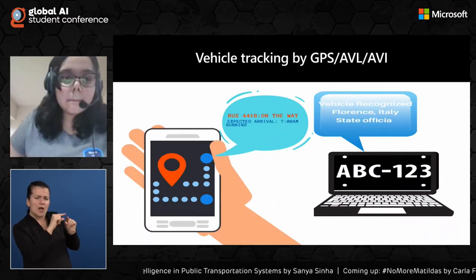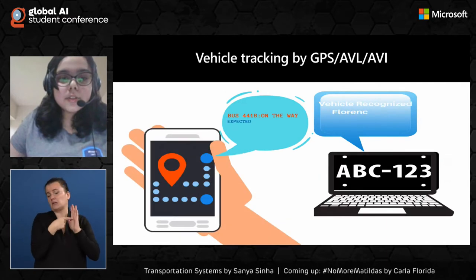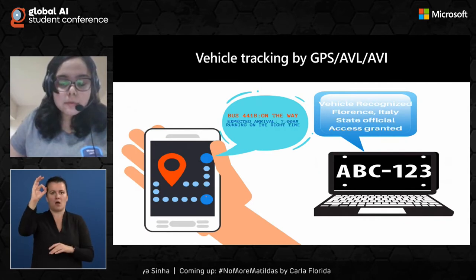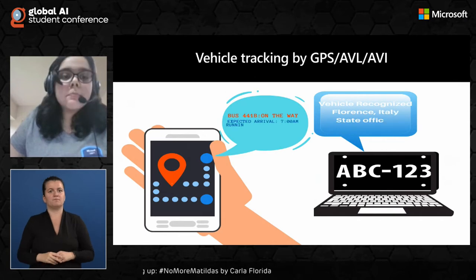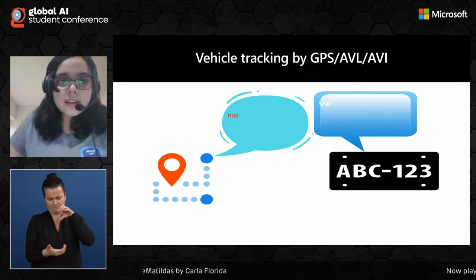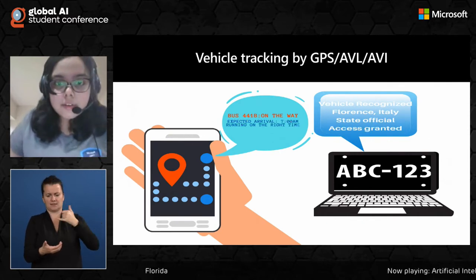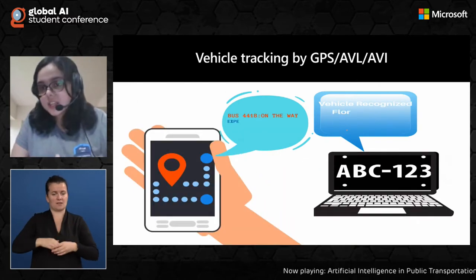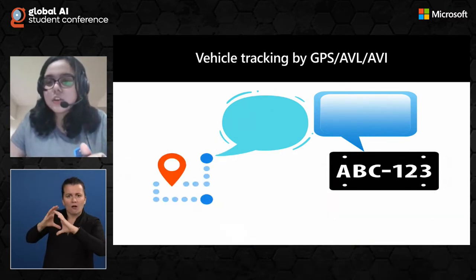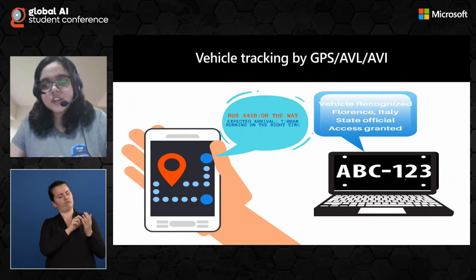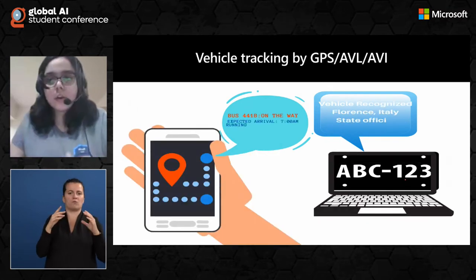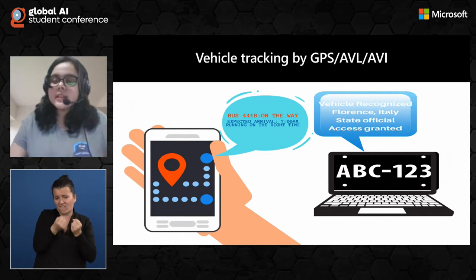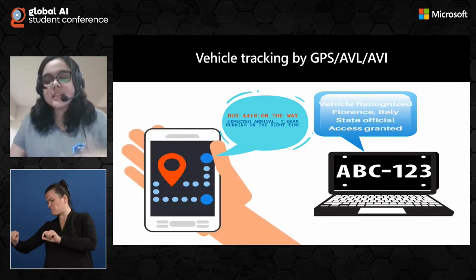In this example, the blue spot denotes the initial point where the bus started and the destination of the bus. The red spot denotes where the bus is right now, and real-time information is passed to passengers such as expected arrival at 7 a.m., running on the right time, and bus 4B on the way. In the case of police investigating unscrupulous vehicles, you could run the number plate through image recognition, object recognition, or OCR (Optical Character Recognition) systems like those offered by Azure Cognitive Services for vehicle recognition — for example, a vehicle recognized as a state official vehicle from Florence, Italy, being labeled as safe and granted access.